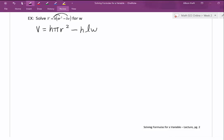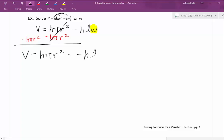We're solving for W. This is pretty much the exact problem that we just did. We want to start by getting rid of this first term here. The way that we're going to do that is by subtracting since it's positive. Those are not like terms on the left so we need to write them right next to each other. V minus HπR² equals negative HLW.